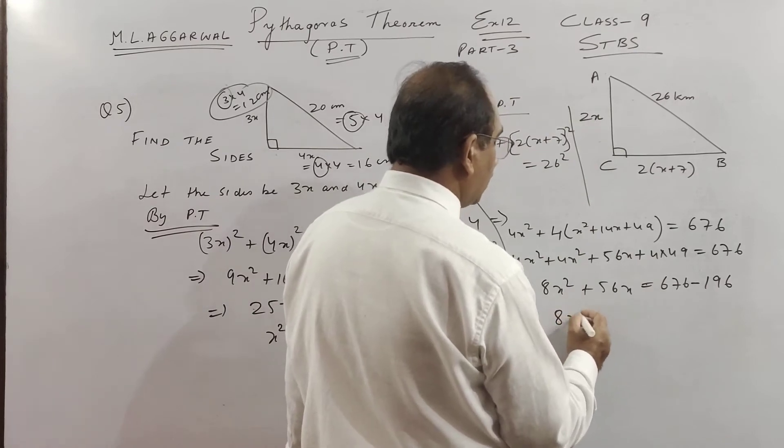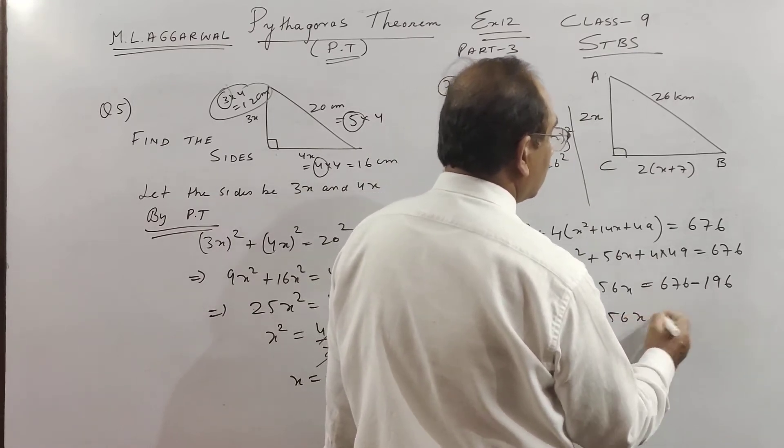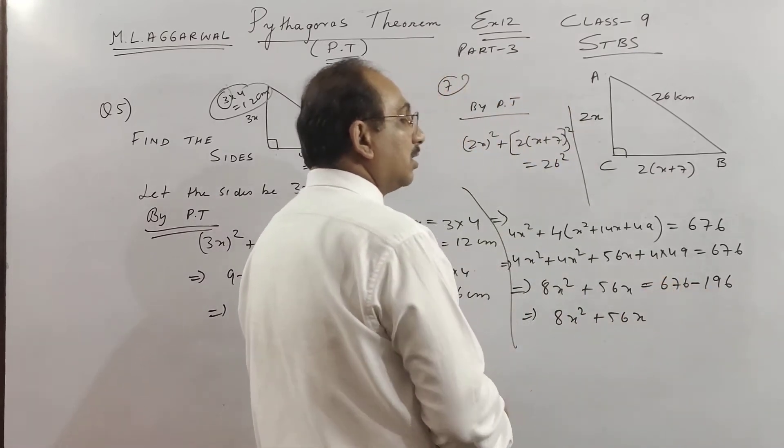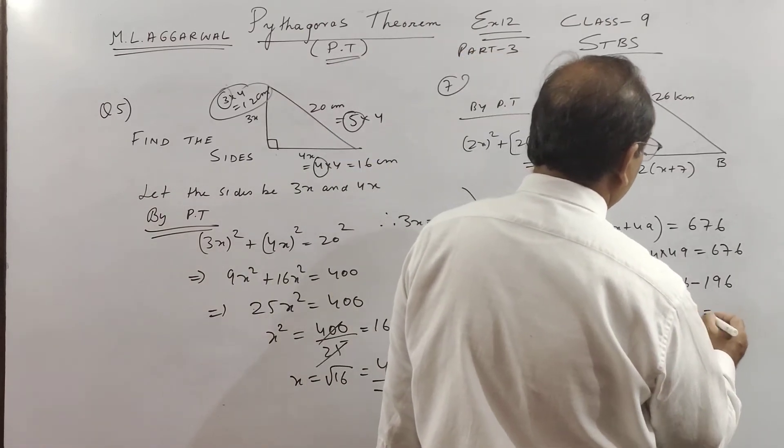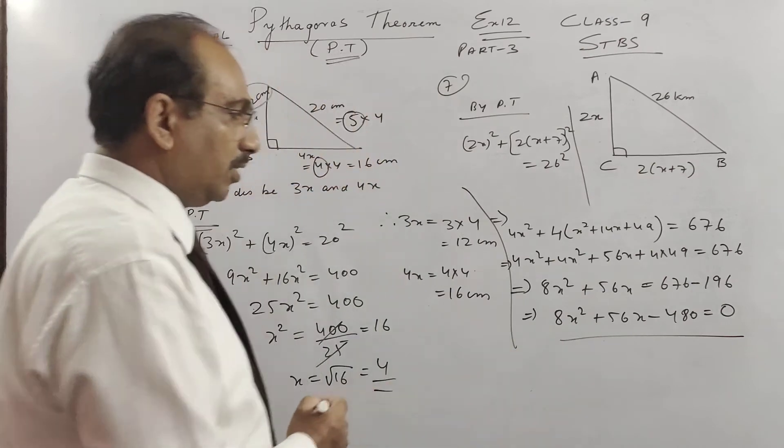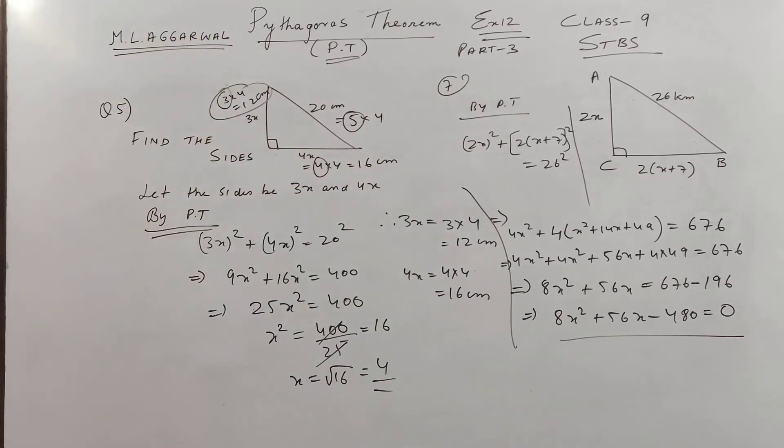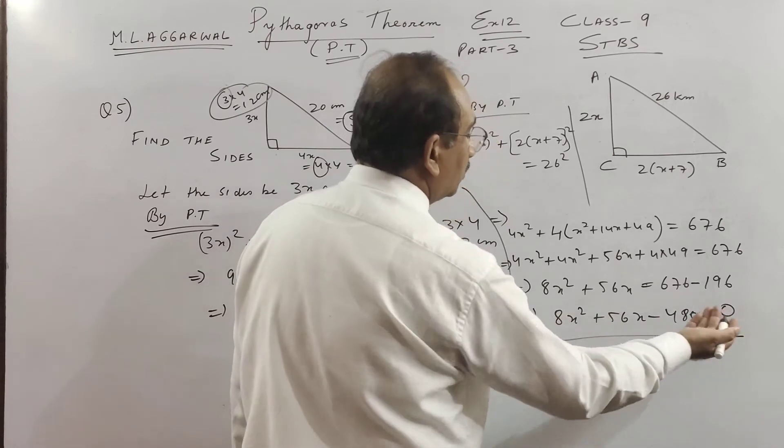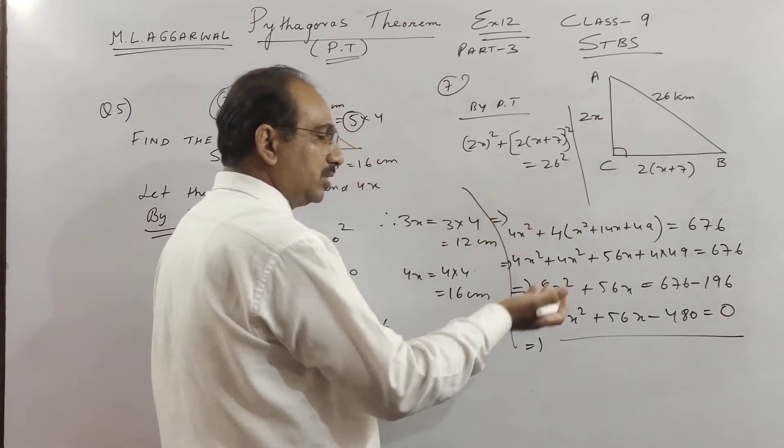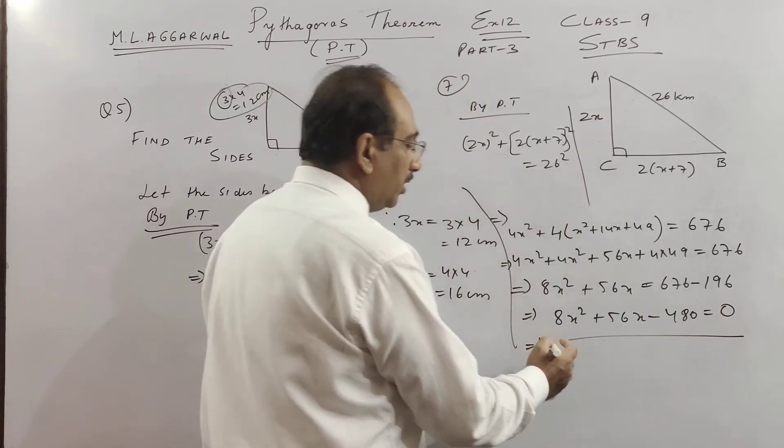So finally we get 8x square plus 56x and if you minus and come to this side I think you will get minus 480. So check whether this is what you are getting or not, then we will take out 8 common children, 8 common and then we will factorize. So see my video on factorization I have explained to you that.